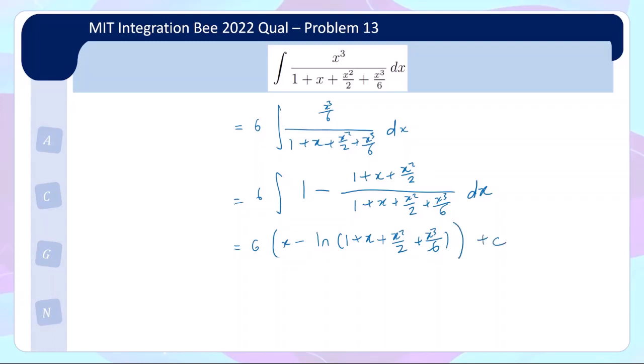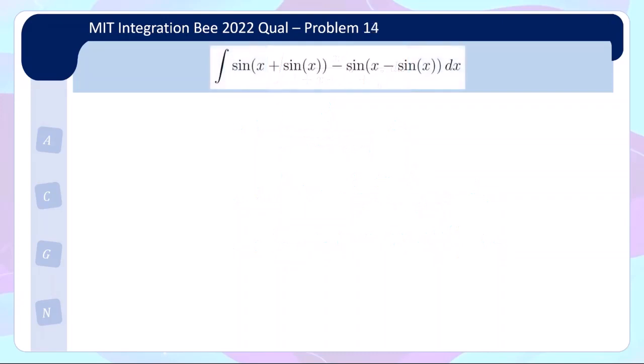That's all for question 13 — it relies on an astute observation. Now let's look at question 14. You see some interesting nested sines, but this question is simpler than it looks. The key trick is to use the sum-to-product formula we already saw: sin a − sin b = 2cos((a+b)/2)·sin((a−b)/2).